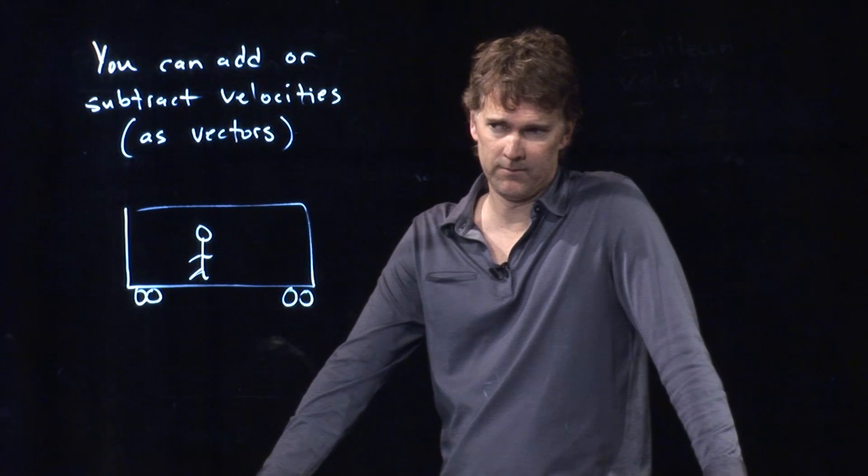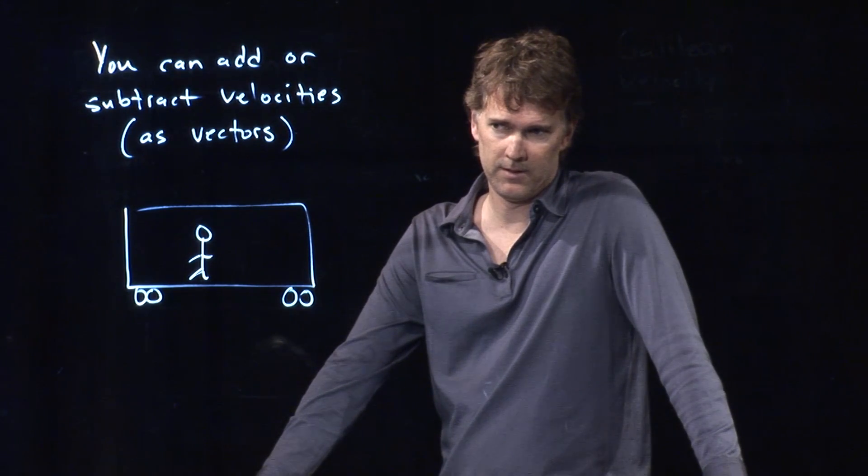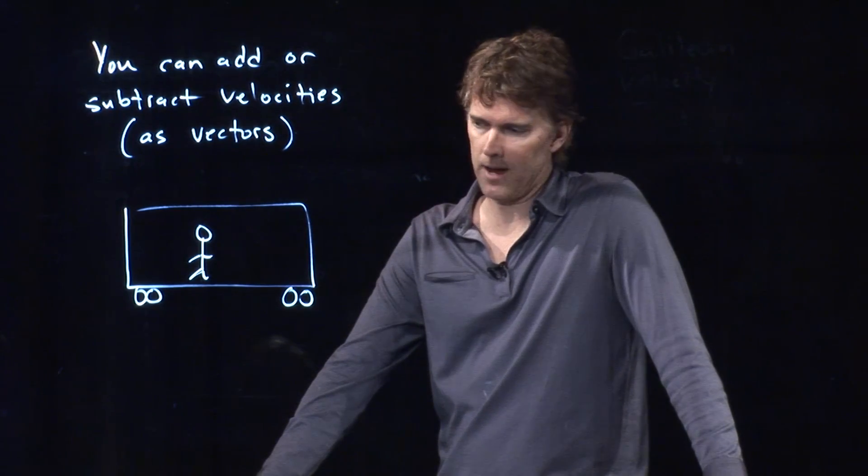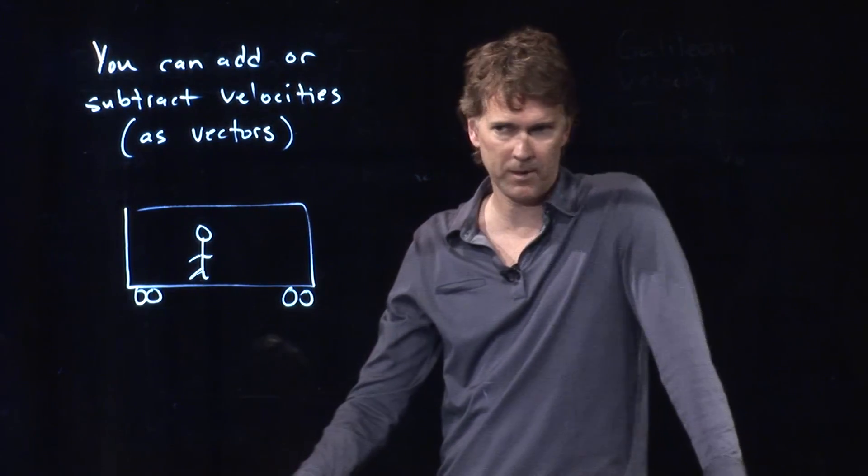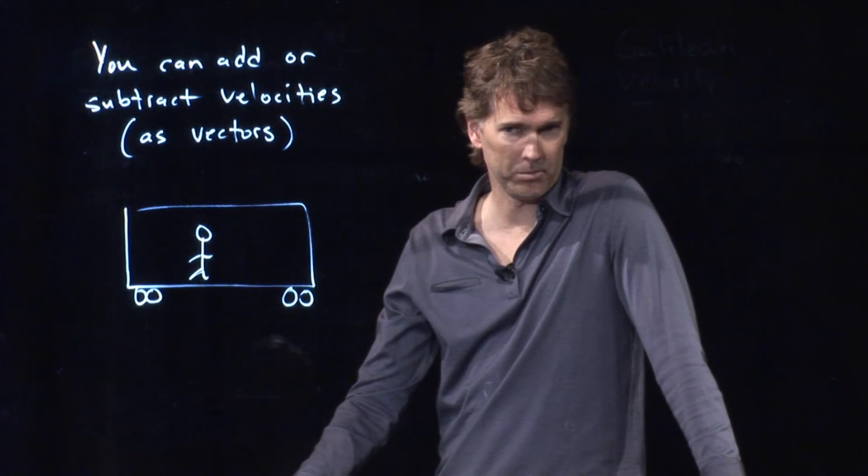Yeah, Sean? It could be 20 miles per hour if they're walking the other direction. It could be 20 miles per hour, absolutely. If I'm walking with the train's motion, it would be 40 miles per hour. If I'm walking against it, it would be 20 miles per hour. Any other possible solution?